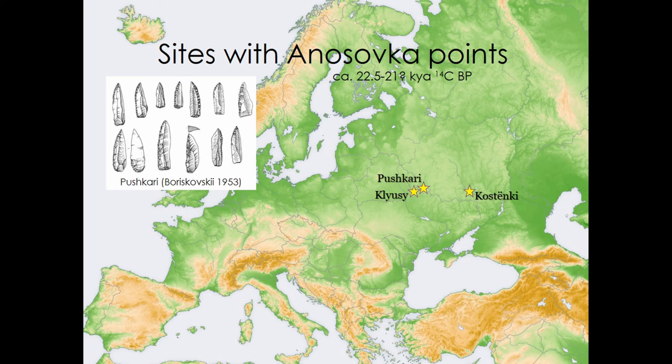What this typological study shows is perhaps the beginnings of a picture of fragmentation around the last glacial maximum. This is just one very small part of the picture in Europe, but this is perhaps where it's going.